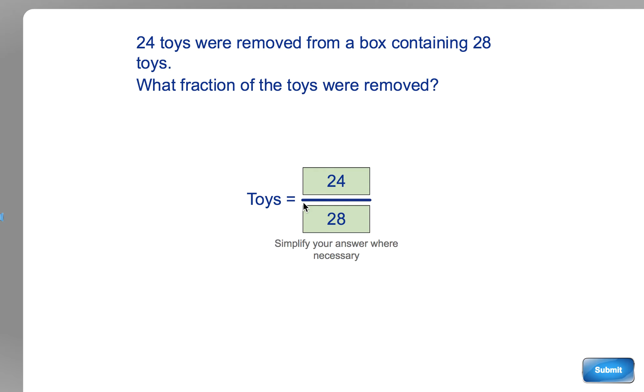Just read the question: 24 toys were removed from a box containing 28, so 24 out of 28 were removed. Remember, fraction: this line just means out of. So 24 out of 28. But it reminds you here to simplify your answer, and that's where you need factors that you can divide both these by.